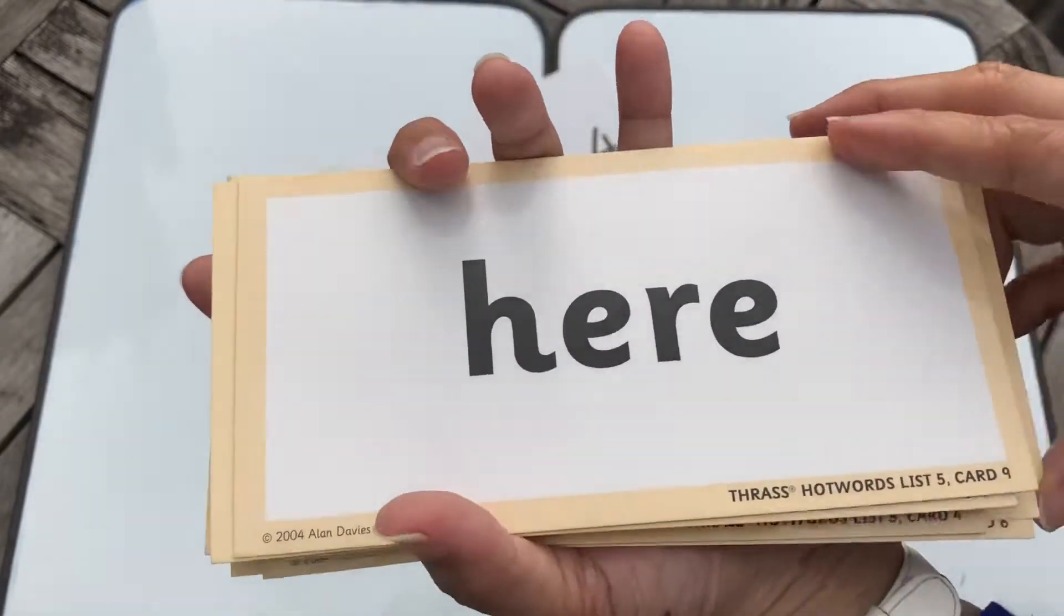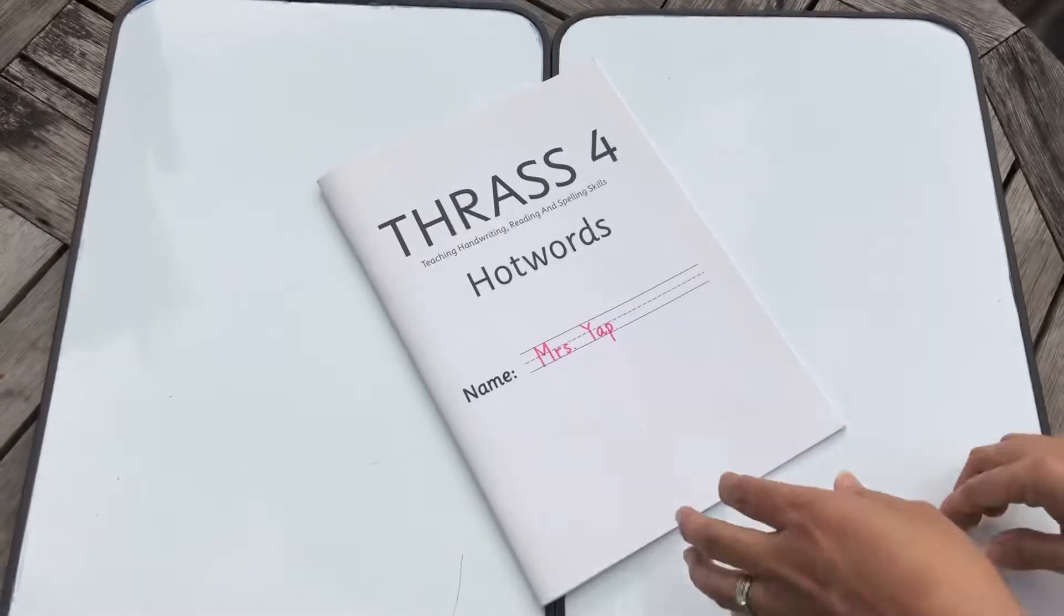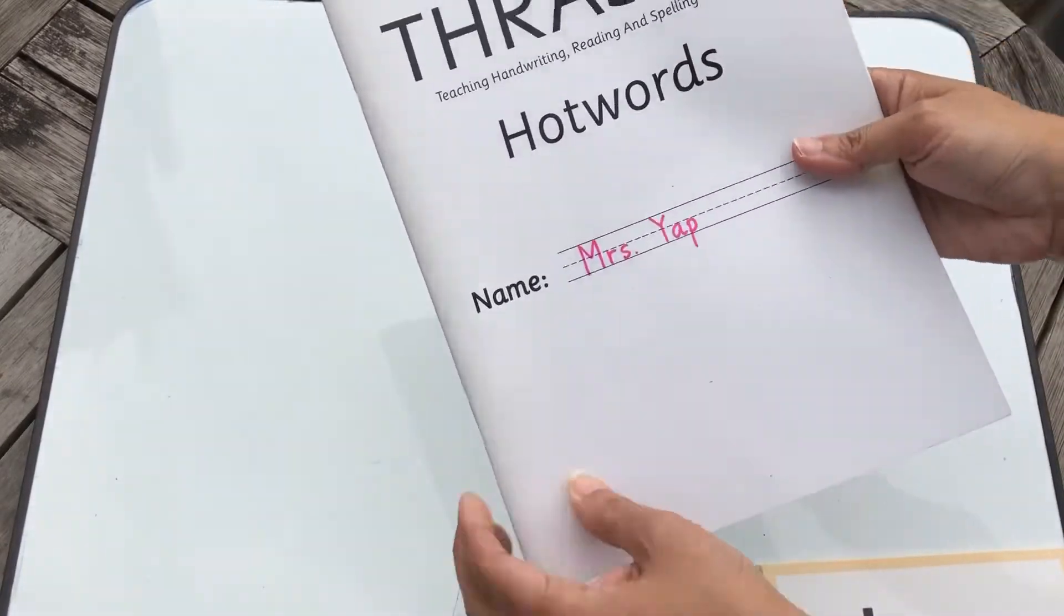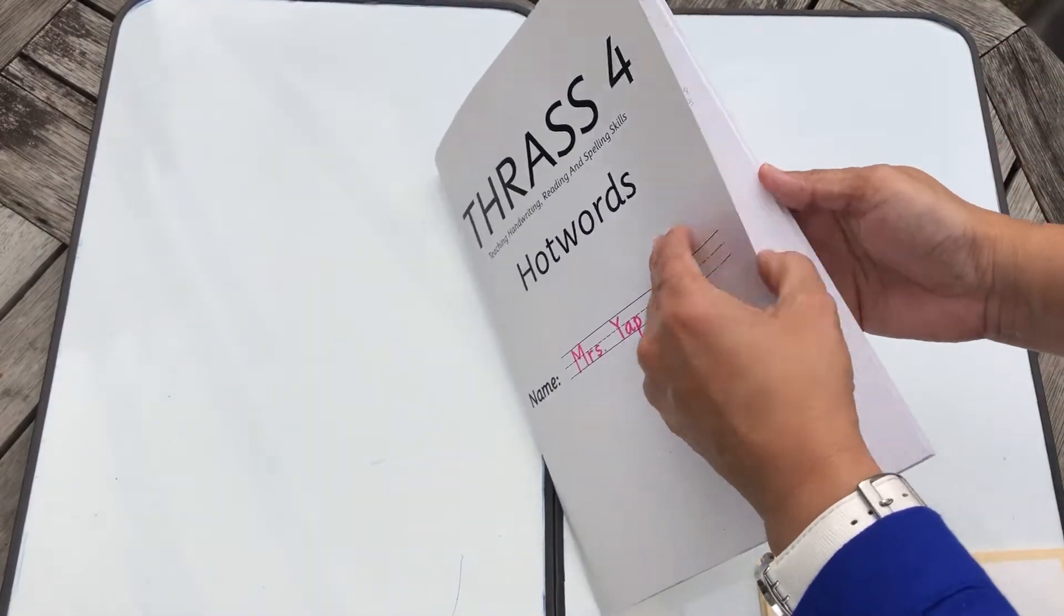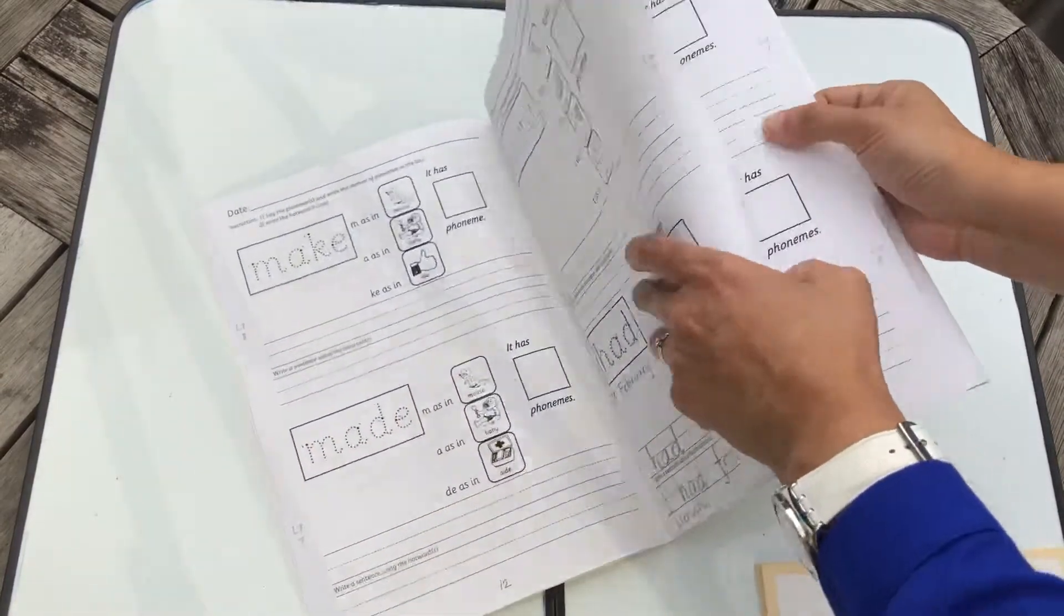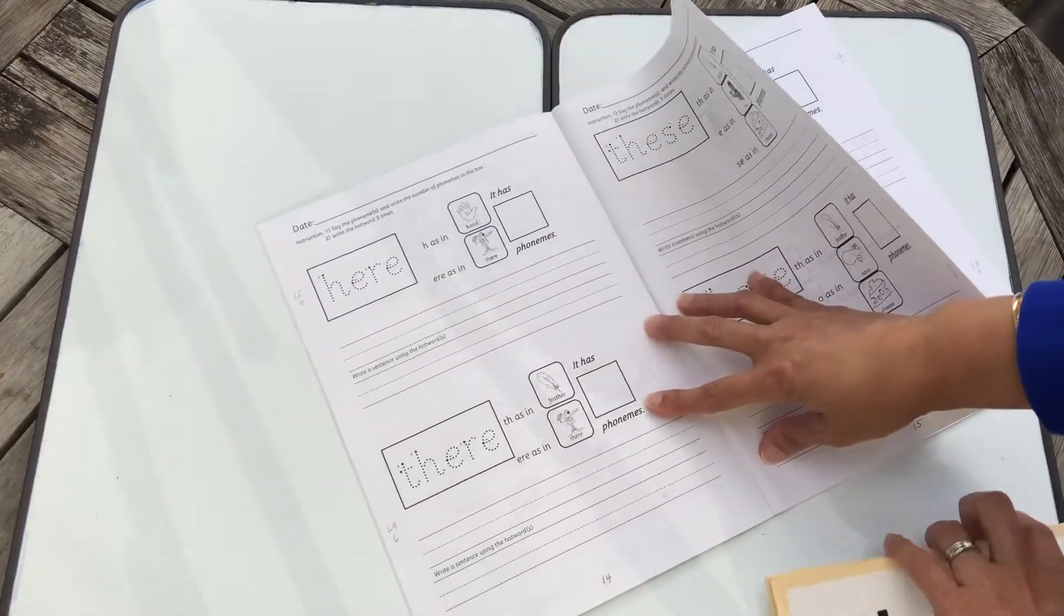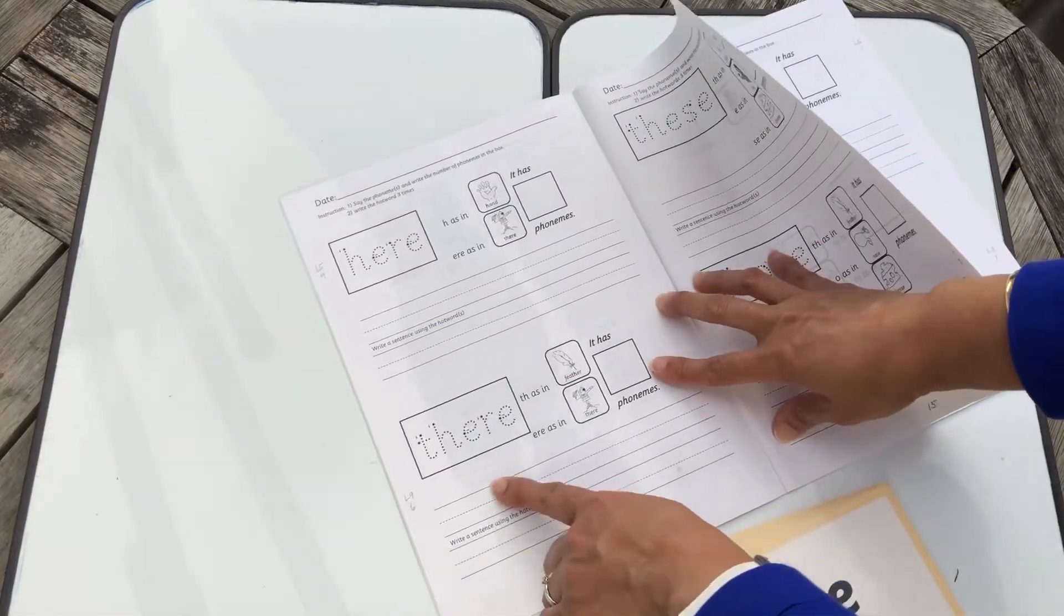Today we're going to practice writing the word here and try to find out the phonemes. So get your hot words workbook and turn to page 14. Do not do the word there, okay? We're only going to do here.